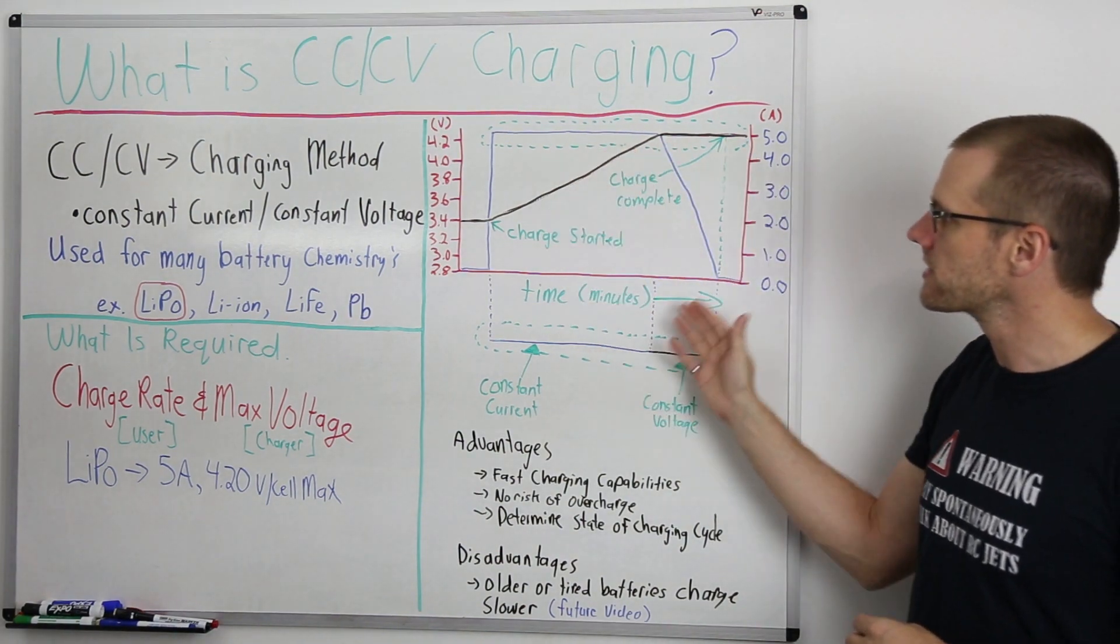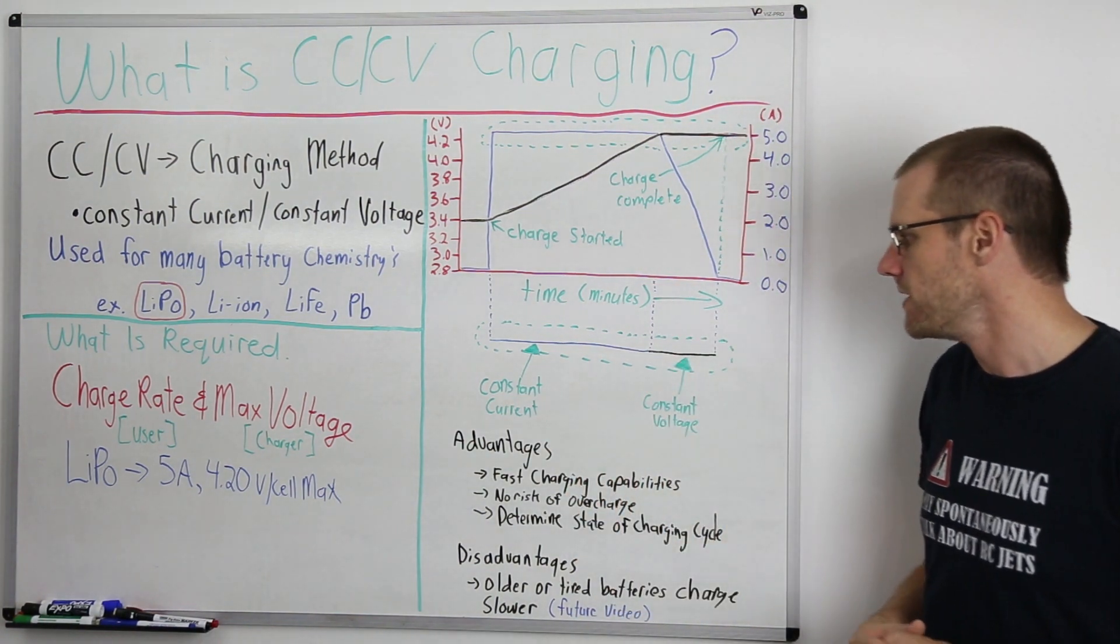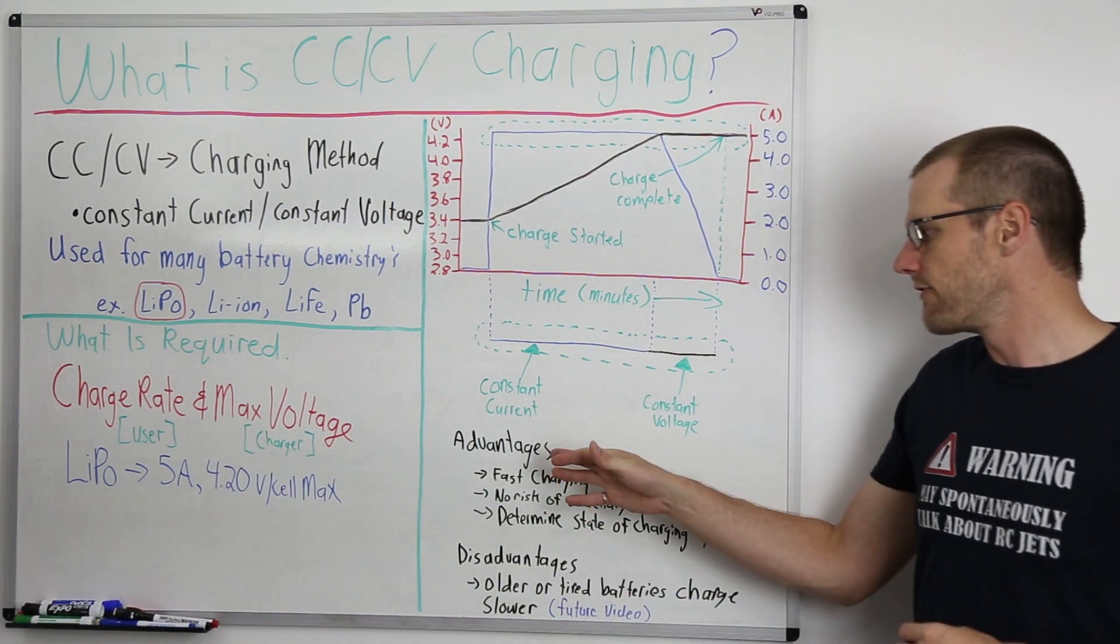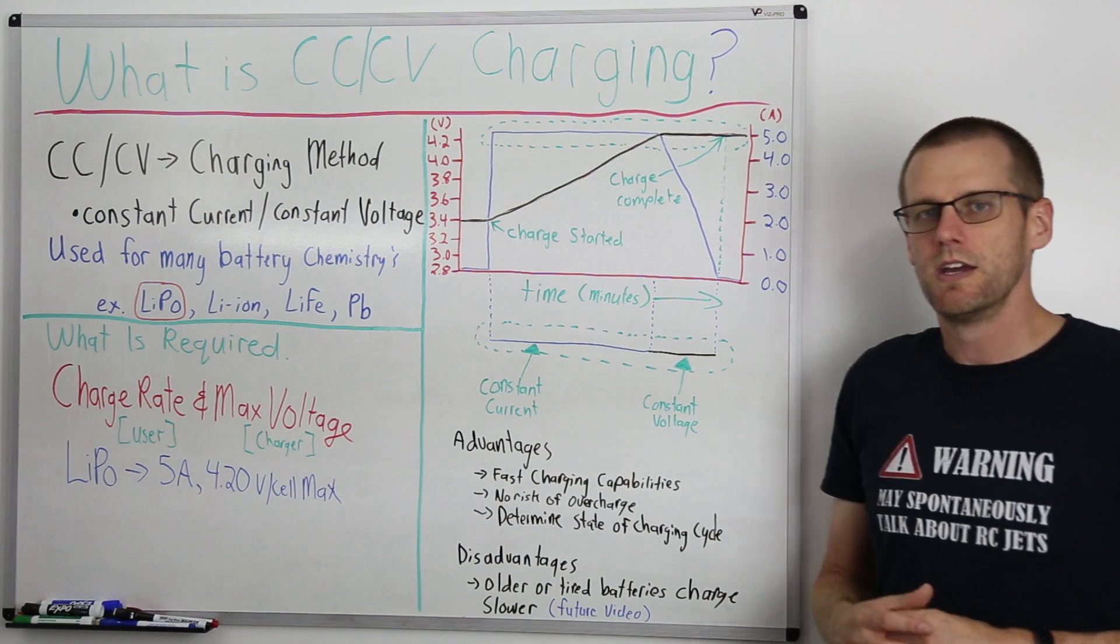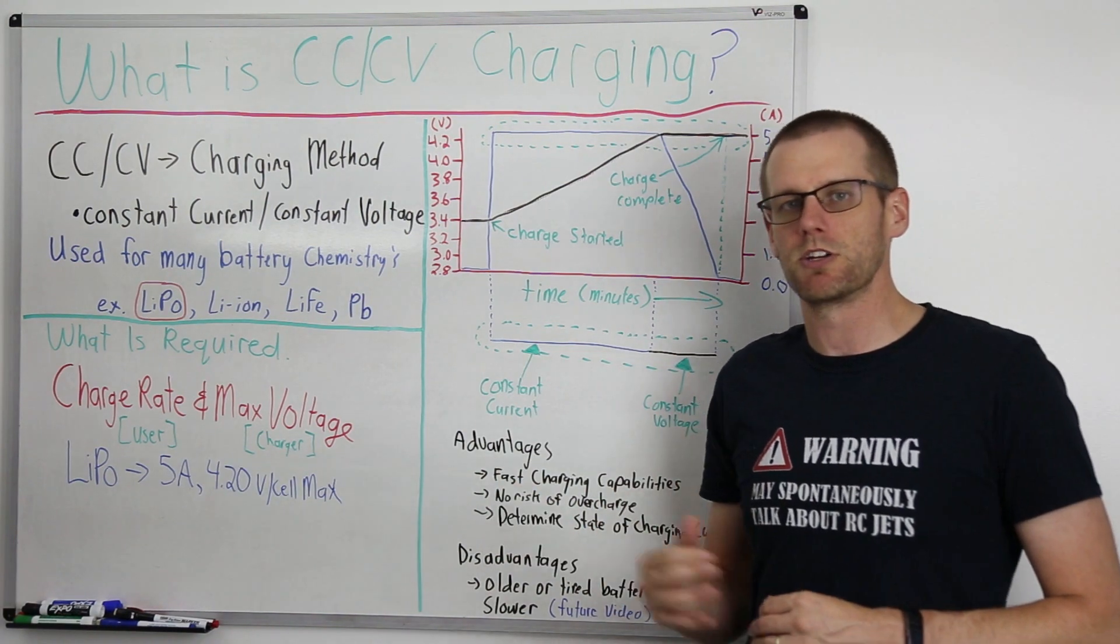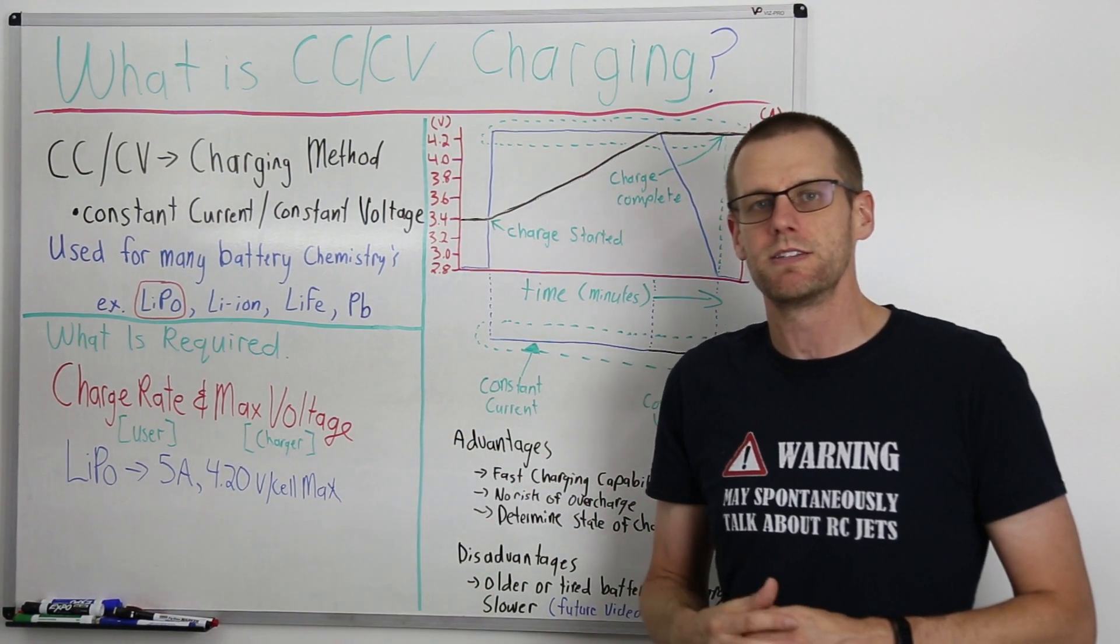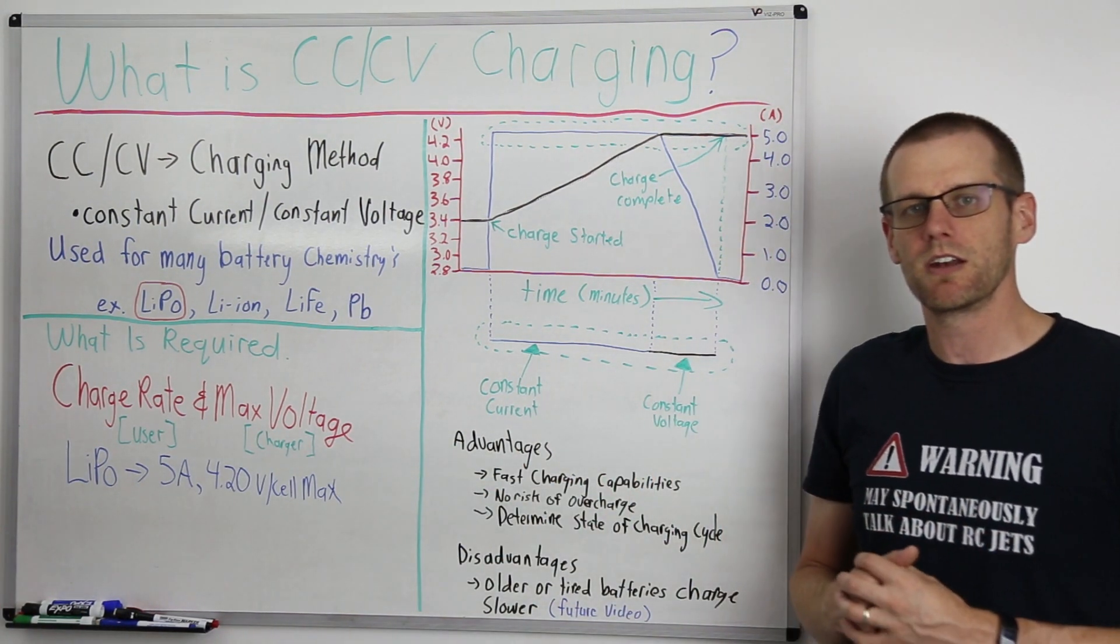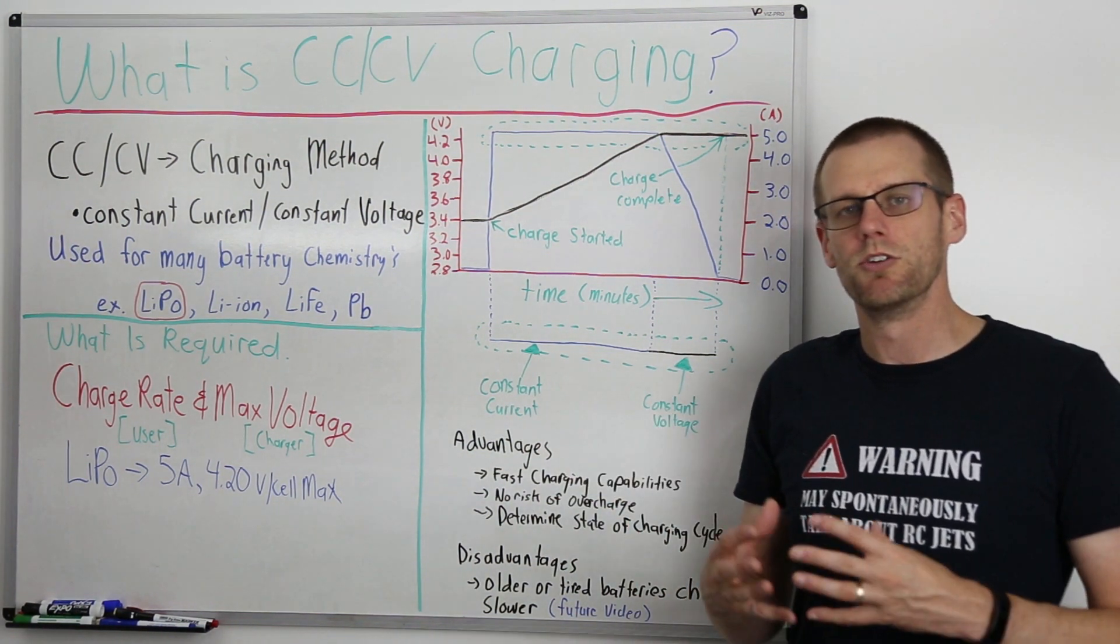So that's essentially how this constant current constant voltage is working within our chargers at a fairly simplified form. Now let's take a look at a couple advantages as well as a disadvantage of this specific charging method. The first advantage that we have here is that you're able to charge a battery at a relatively fast charging rate. This means that we're very capable of handling all different types of charging rates with this specific charging method. We can charge batteries typically from anywhere on 1C rates all the way up to 5C rates if our battery is able to accept and handle that charging rate. Always make sure you're taking a look at your battery manufacturer's instruction sheet that comes with it to be certain of the maximum charging rate you're able to use.